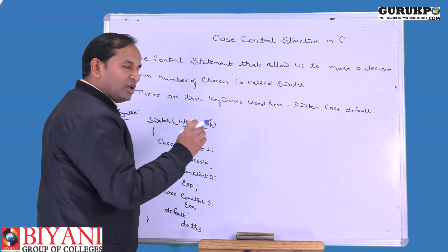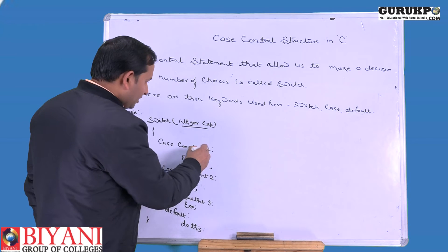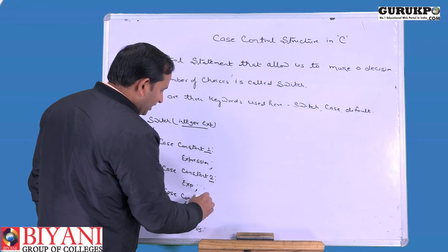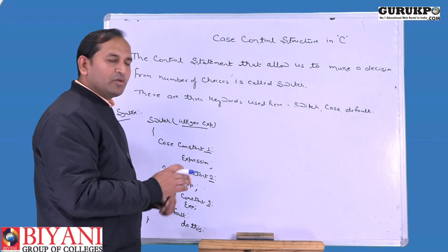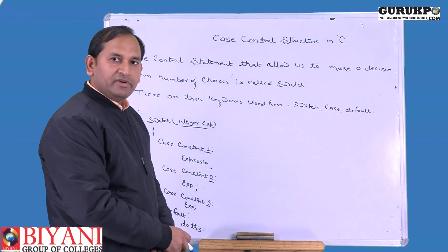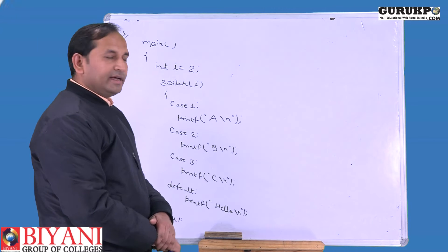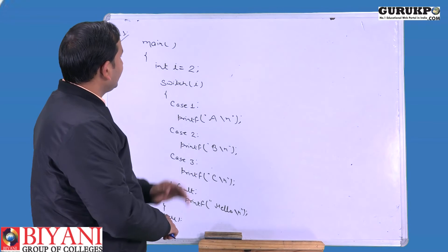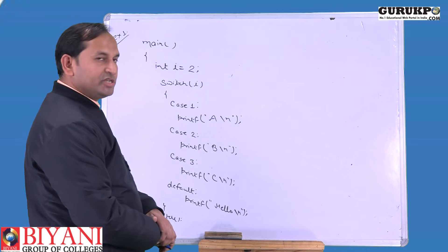This integer value will always compare to case values, and according to the particular match, a particular block will be executed. Now we'll take an example of switch case. In this given example, we have an integer variable i; its value is 2.